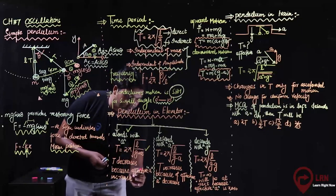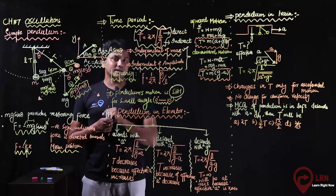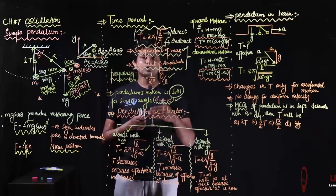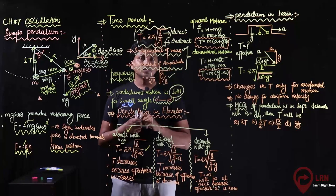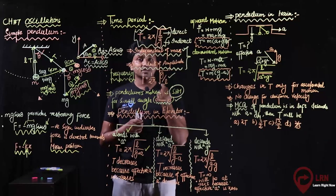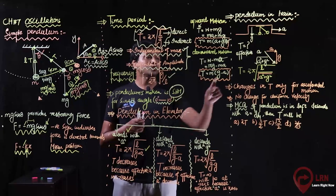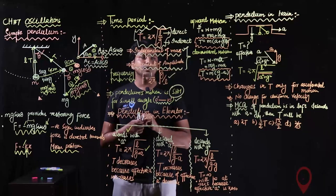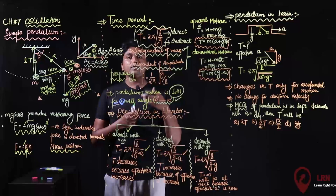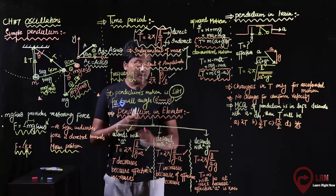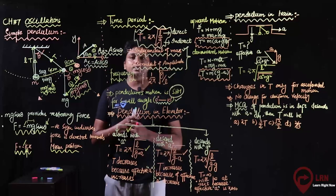After that, if the lift is moving downward with acceleration a, the effective acceleration decreases and becomes g minus a. So we put g minus a instead of g, and the formula becomes T = 2π√(L/(g-a)). Since effective acceleration is decreasing, and there is an inverse relation, T will increase. T increases because effective acceleration decreases.